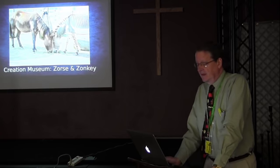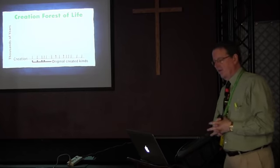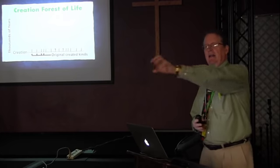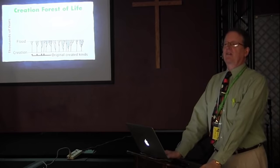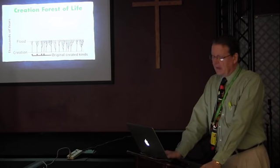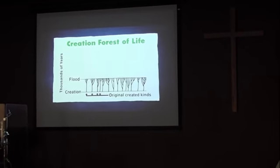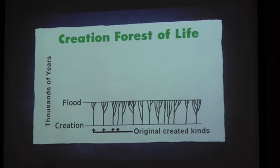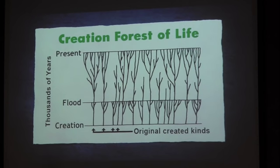That's the horse kind. So in contrast to the evolution tree of life, we have the creation forest of life. Each tree is a different kind of creature — the dog kind, the cat kind, the alligator kind, the chicken kind. They had in their genetic information built-in variety which was eventually expressed as they reproduced. But one kind didn't change into a different kind. And then two of every land animal kind and bird kind came on the ark, came off the ark, and had more time to produce variety within their kind — but not to change into a different kind.